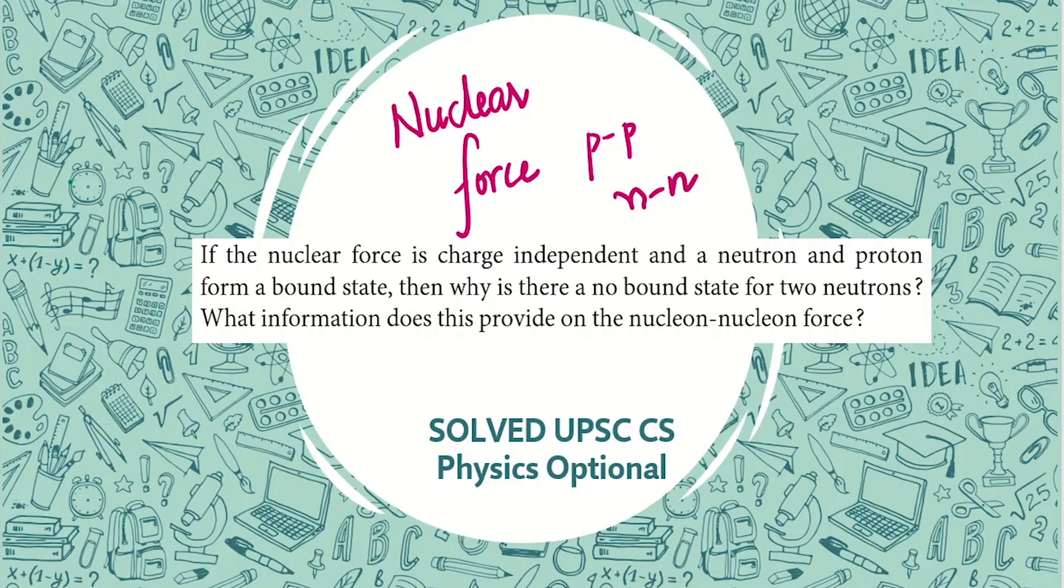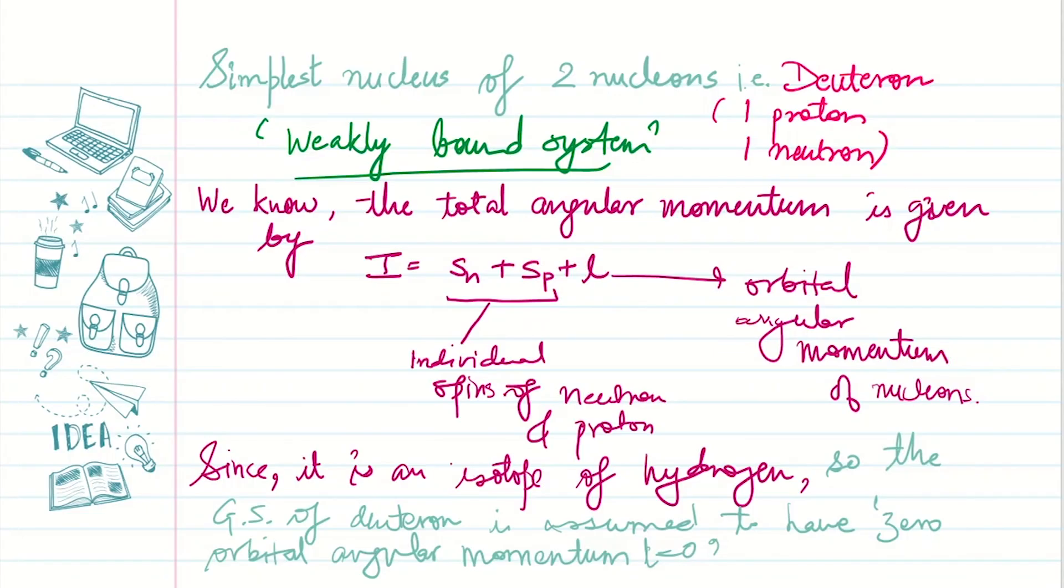The simplest nucleus of two nucleons is the deuteron, which contains one proton and one neutron.